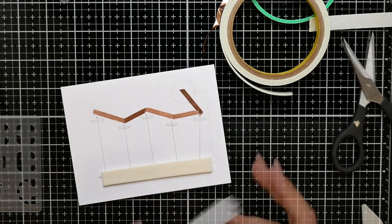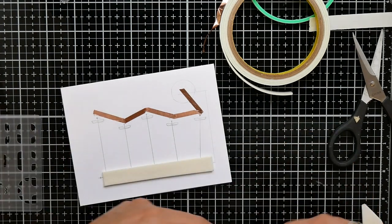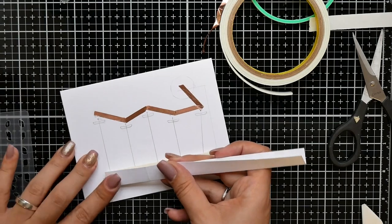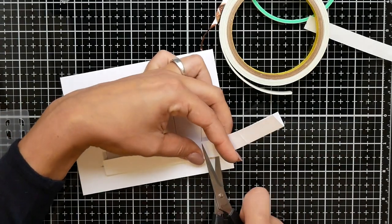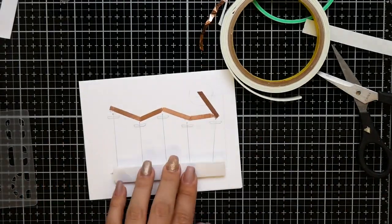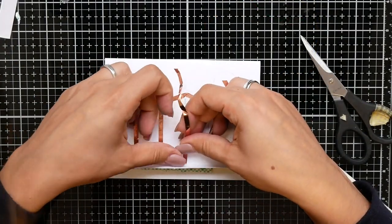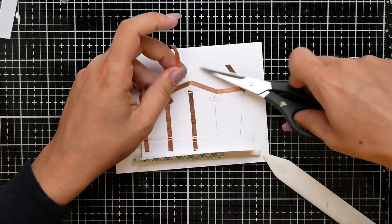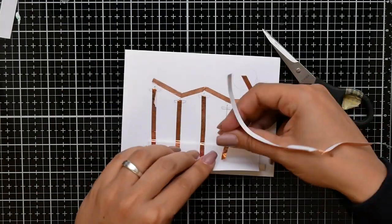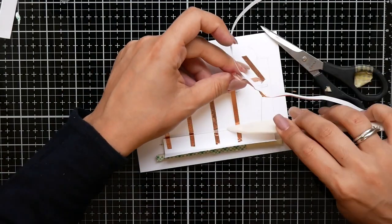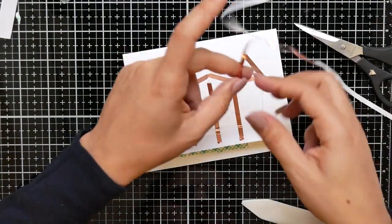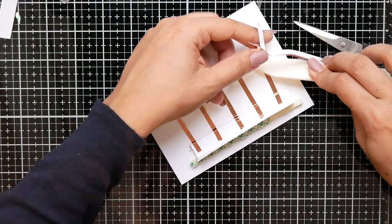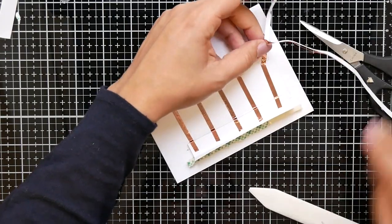I'm taping on top of the double-sided foam tape a strip of paper that is folded in the middle. You will see later why it needs to be folded in the middle. Now I'm taping down the other half of the circuit.